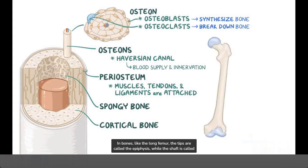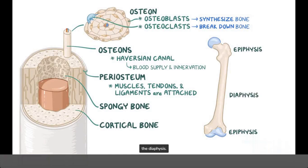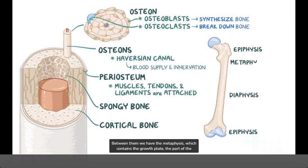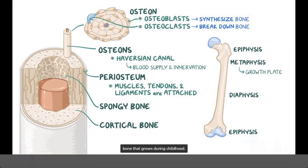In bones like the long femur, the tips are called the epiphysis, while the shaft is called the diaphysis. Between them, we have the metaphysis, which contains the growth plate, the part of the bone that grows during childhood.